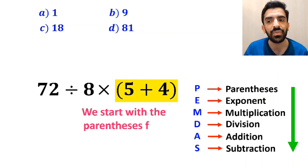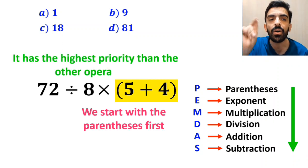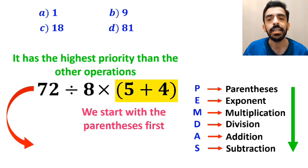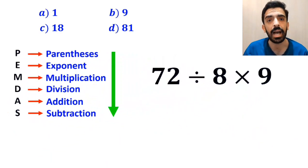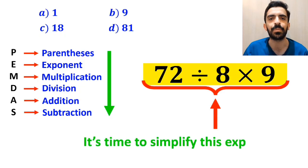So, we start with the parenthesis first because it has the highest priority than the other operations. Okay, this expression simplifies to 72 divided by 8 then times 9. Now, it's time to simplify this expression.